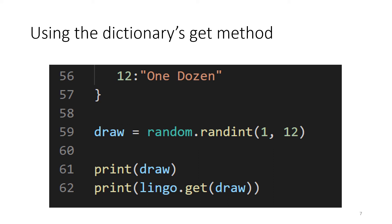In 59, we are once again using our random class to get a random number between 1 and 12 inclusive. In 61, we are showing that in the terminal with the number we drew. And then in 62, we are getting the corresponding phrase.